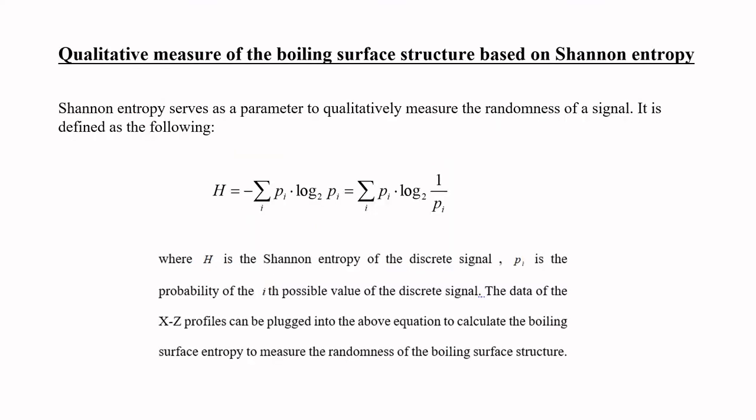Here we talk about the collective measure of the boiling surface structure based on channel entropy. Channel entropy serves as a parameter to collectively measure the randomness of a signal, and it is defined by this formula. Here, H is the channel entropy and PI is the probability of the highest possible value of the discrete signal. The data of the XZ profiles can be plugged into this equation to calculate the boiling surface entropy and measure the randomness of the boiling surface structure.